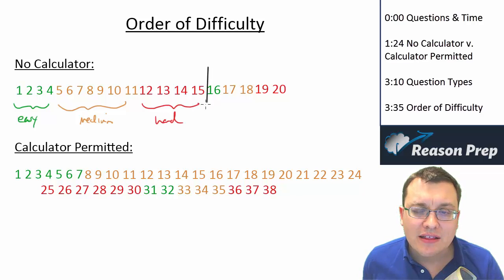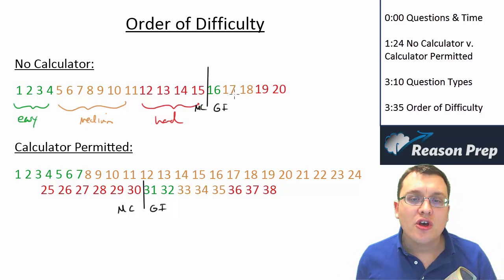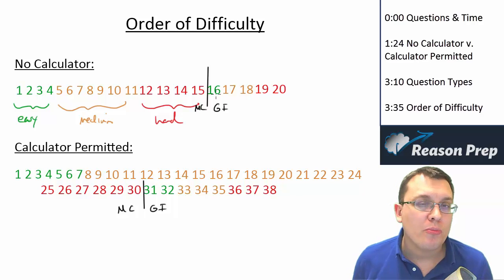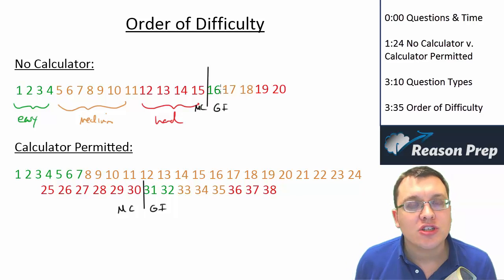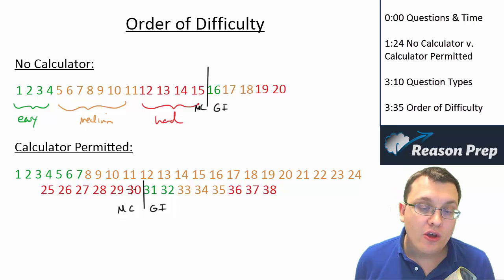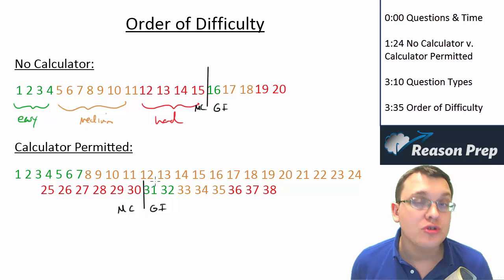Now note, it restarts again. In fact, this occurs in both of the sections. And this occurs because this is where the multiple choices and the grid-ins split. So when you go to your grid-ins, your difficulty resets a little bit. Maybe it goes down, not maybe to an easy easy question, but certainly to an easier question than number 15. 31 will certainly be easier than 30. So you really have almost two sections in one in terms of the order of difficulty.